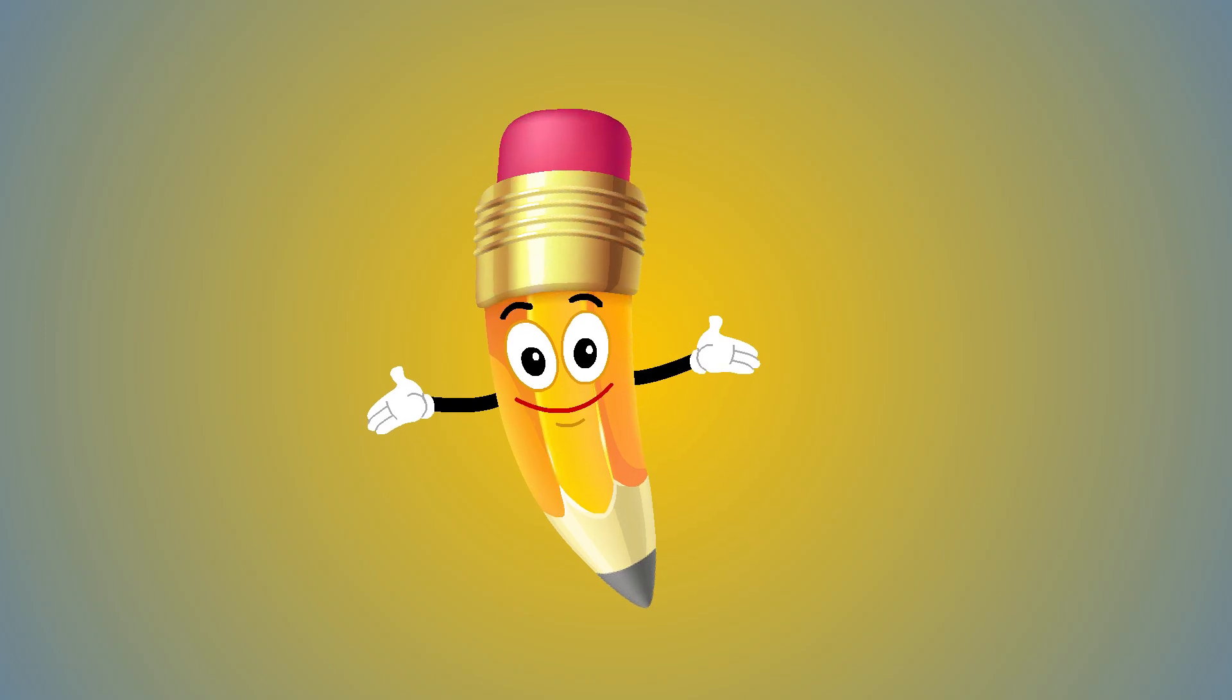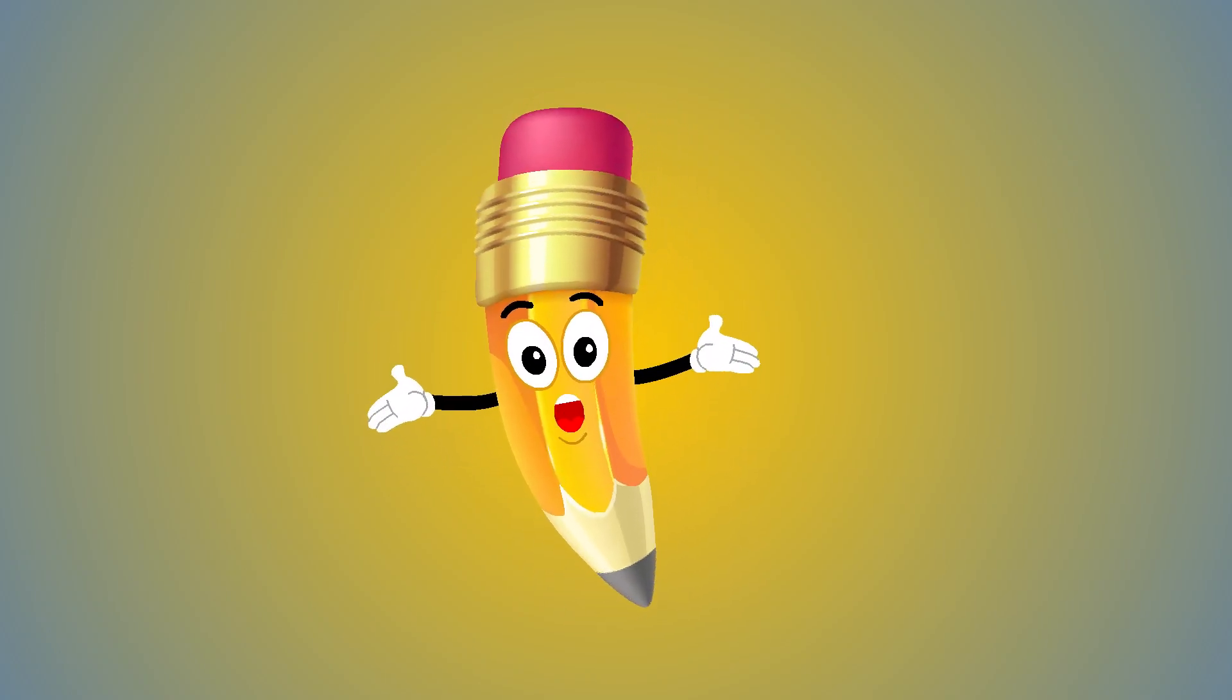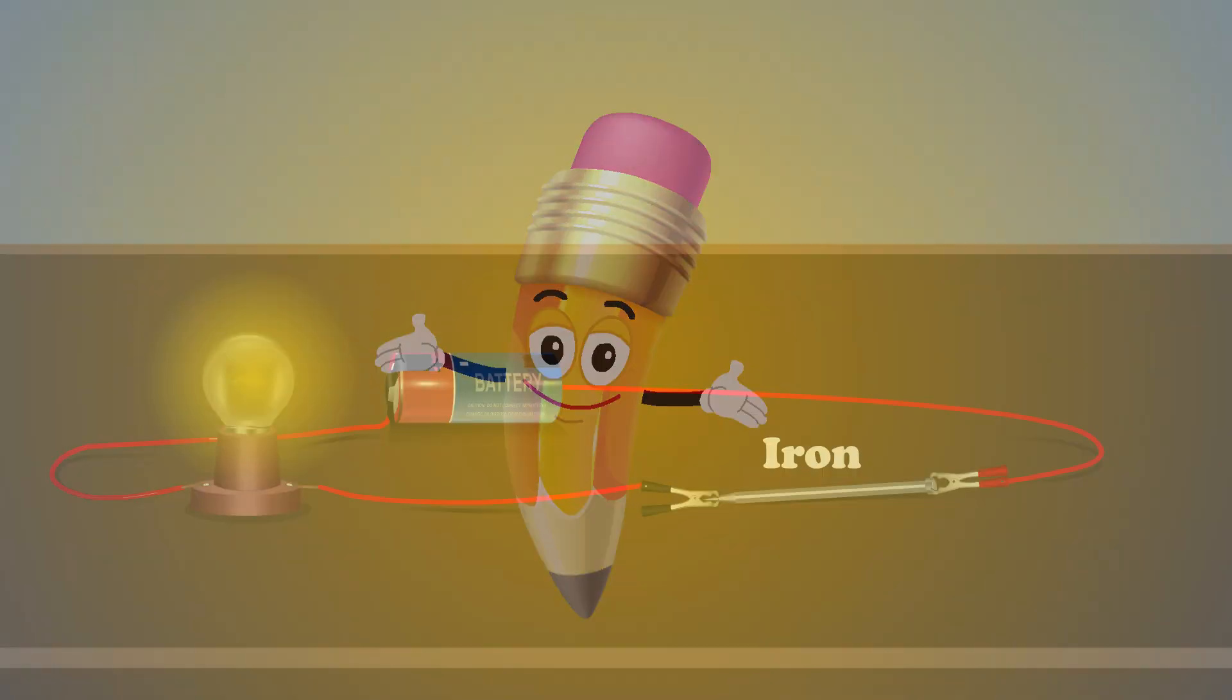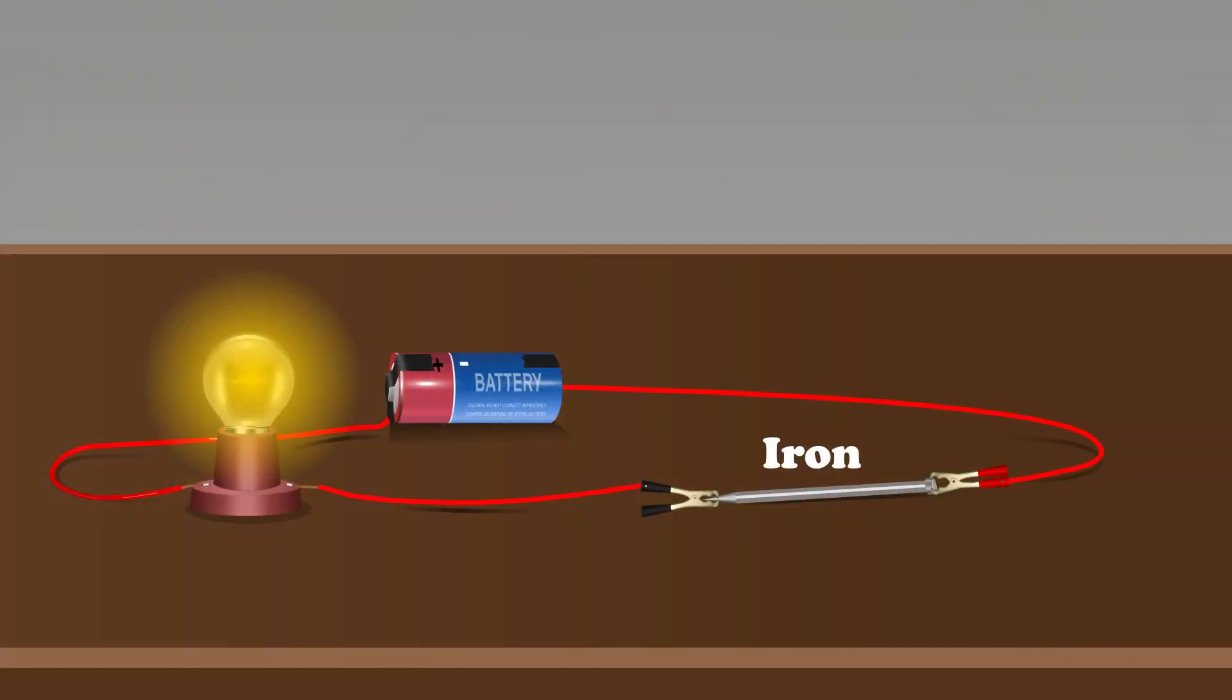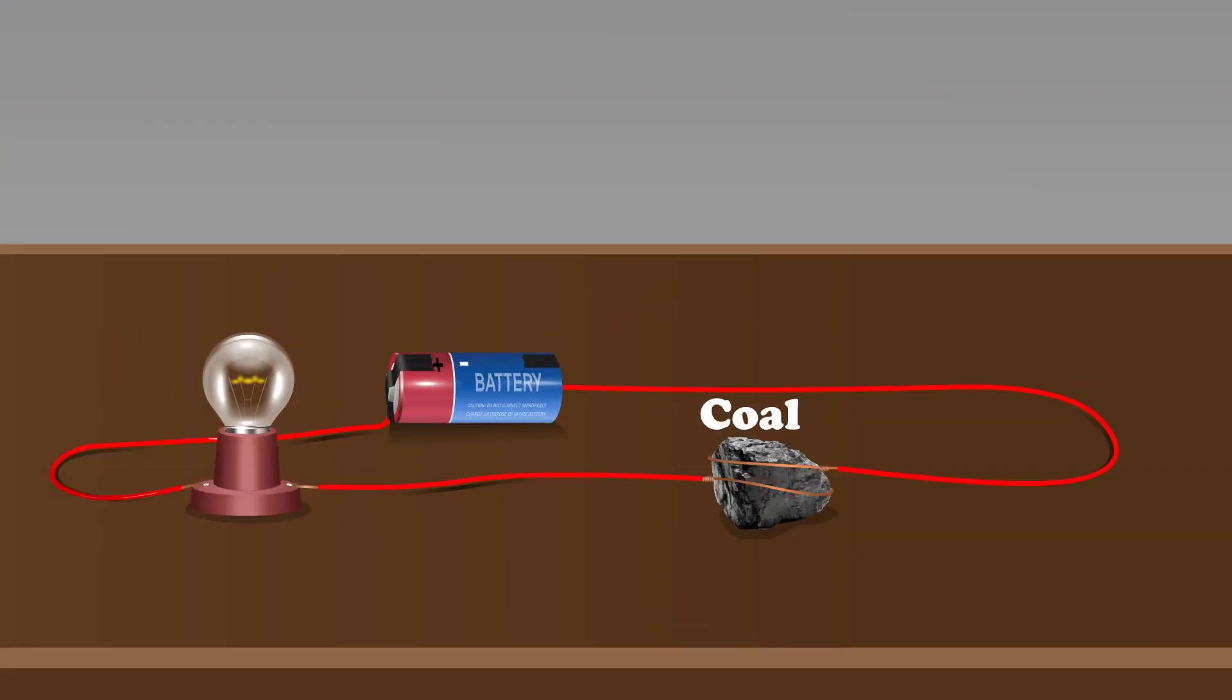Alright, testing complete. Now let's check out our results and see who's a conductor and who's not. The bulb glows when iron is used. Iron conducts electricity. The bulb does not glow when a piece of coal is used. Coal does not conduct electricity.